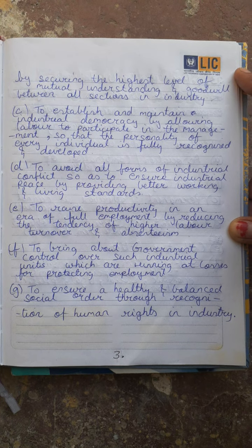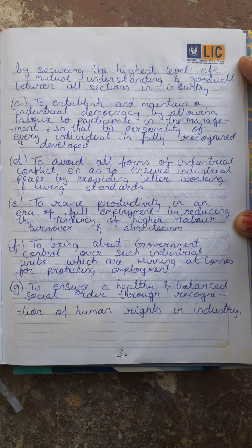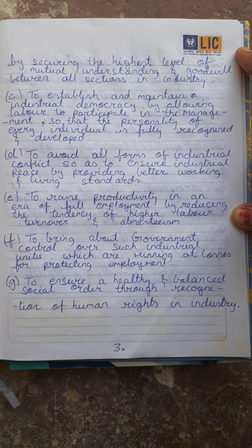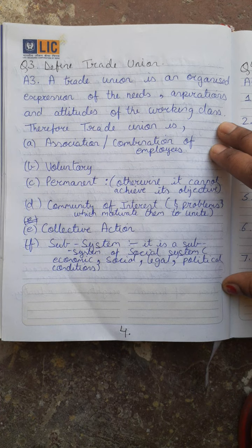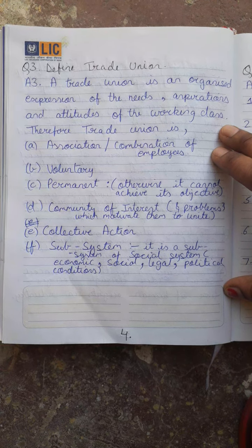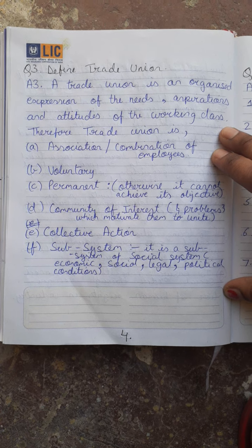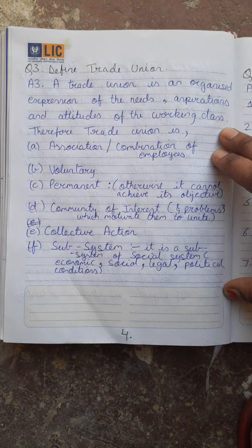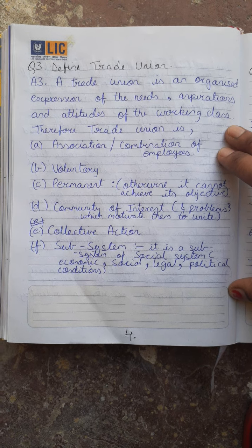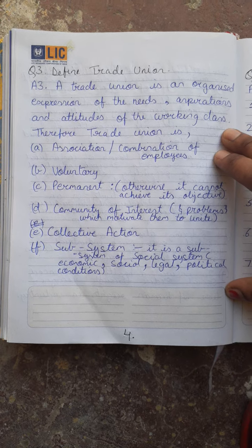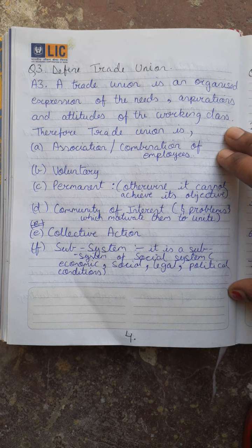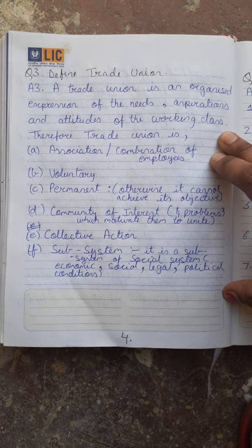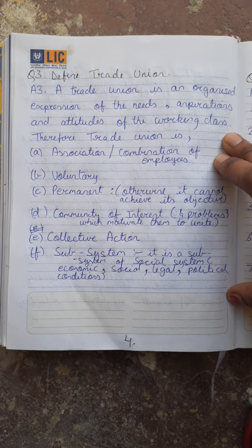Sixth objective of industrial relation is to bring about government control over industrial units which are running at losses. The last objective is to ensure a healthy and balanced social order, achieved through recognition of human rights in industry. To achieve harmonious cooperation in industry, trade unions play a very important role.